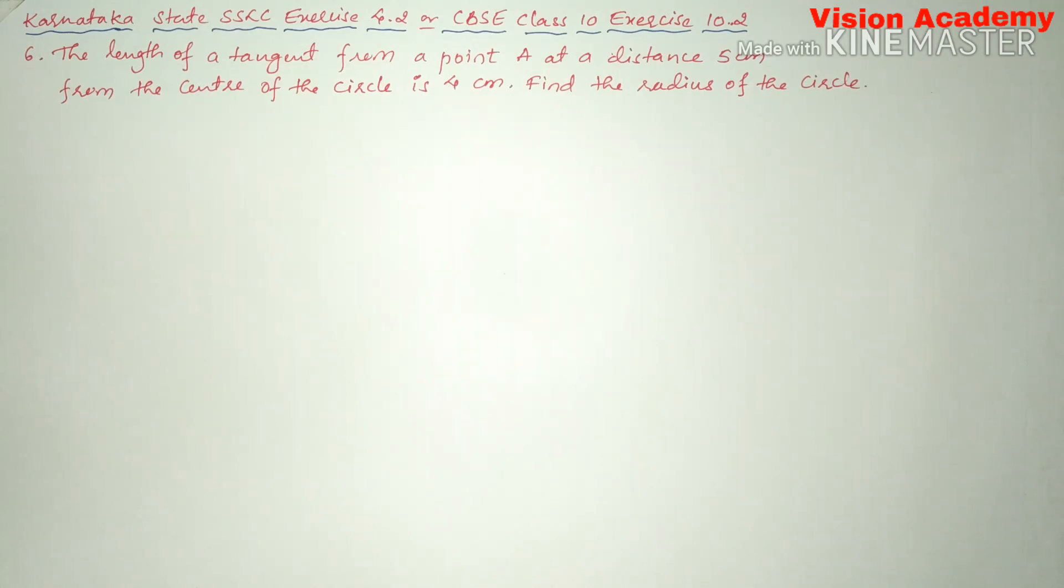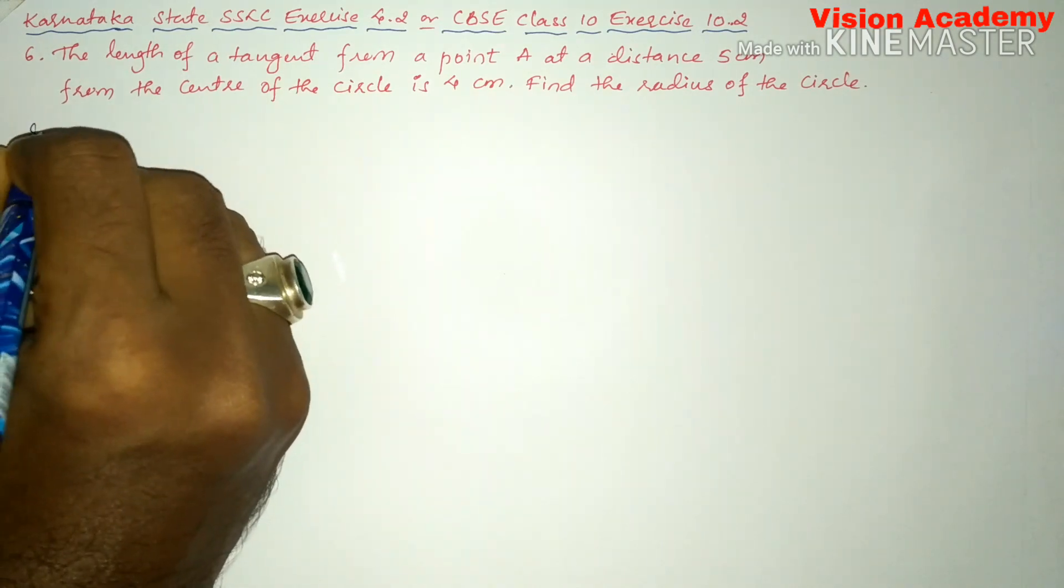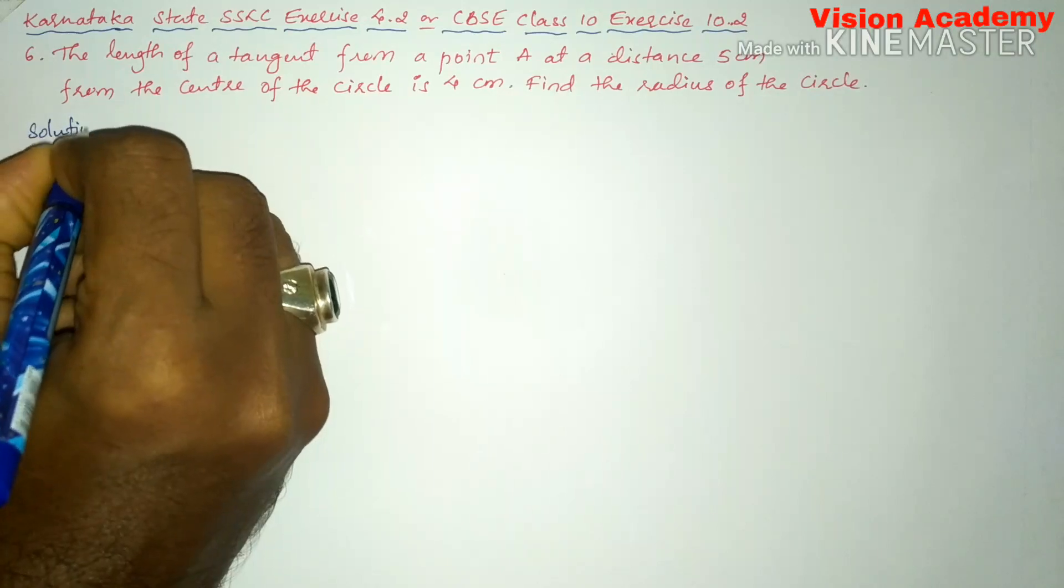Question number six: the length of a tangent from a point A at a distance five centimeter from the center of the circle is four centimeter. Find the radius of the circle. Let us find the solution for the given problem.